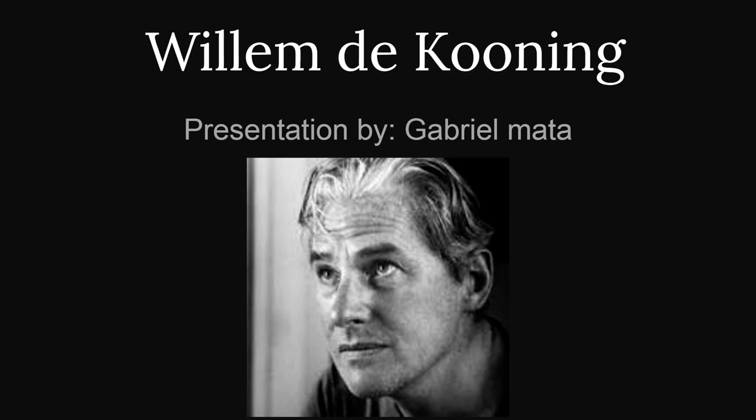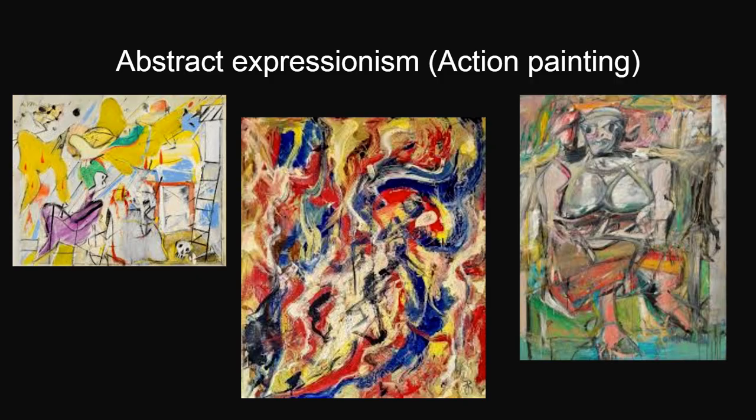In the years after World War II, de Kooning painted in a style that became referred to as abstract expressionism or action painting. We can see from these works how he uses bright colors and introduces outlines of what seems to be people. In the far left painting, a human skull can be seen in the bottom right, symbolizing death.